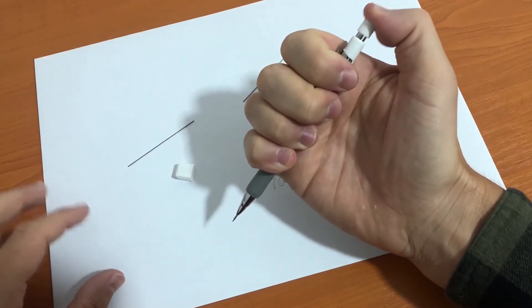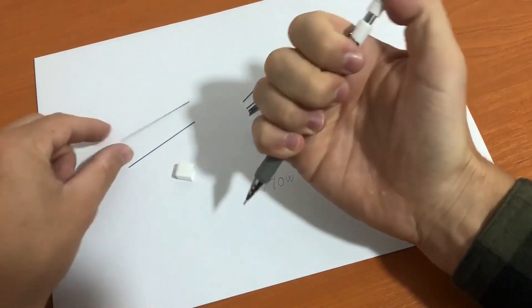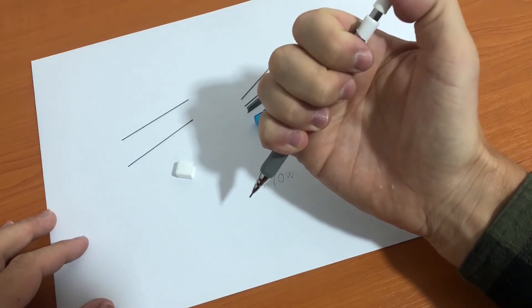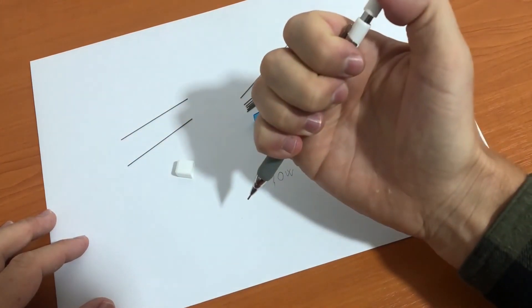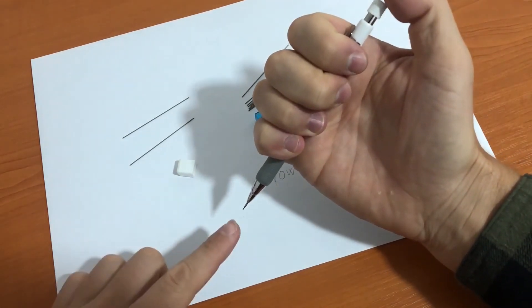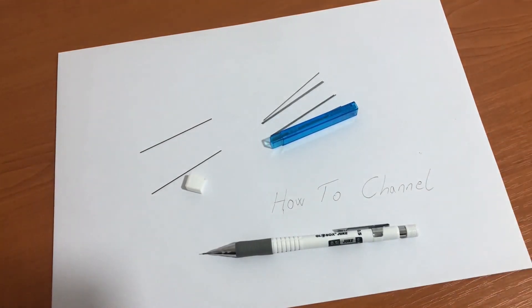And let's see if the third lead is coming out. Press it a couple of times, a couple more times, and the third lead is also coming out. So the easiest way is to use just two or three leads, write with them, and refill when you need new ones. I hope this helps you. Thanks!